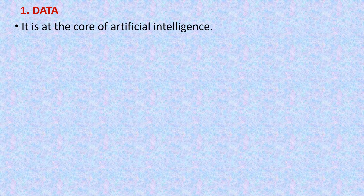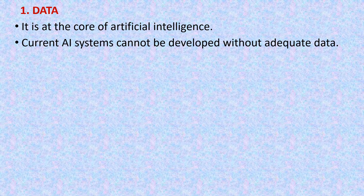The first domain is data. Data is at the core of artificial intelligence. We know that for any artificially intelligent machine we need data, so it is the core of artificial intelligence. Current AI systems cannot be developed without adequate data. As we have discussed, all AI systems are based on artificial narrow intelligence, so they need data. Without data we cannot make any AI system.